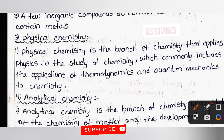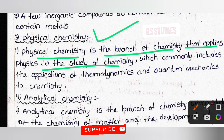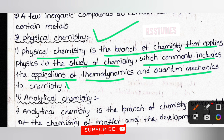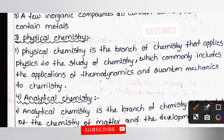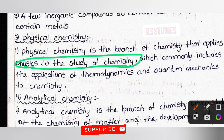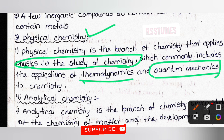Physical chemistry is the branch of chemistry that applies physics to the study of chemistry, which commonly includes the applications of thermodynamics and quantum mechanics to chemistry. So here we discuss thermodynamics topics and quantum mechanics within physical chemistry.